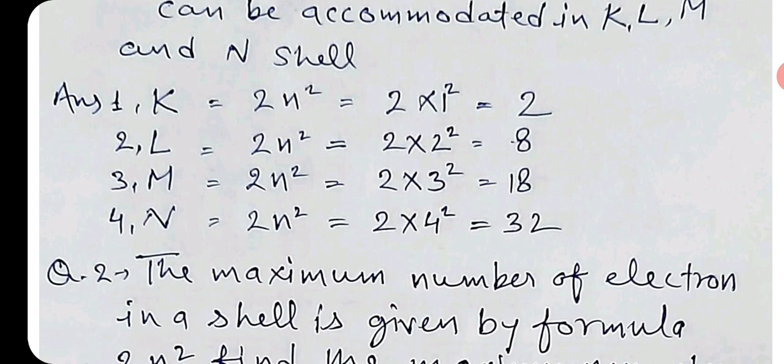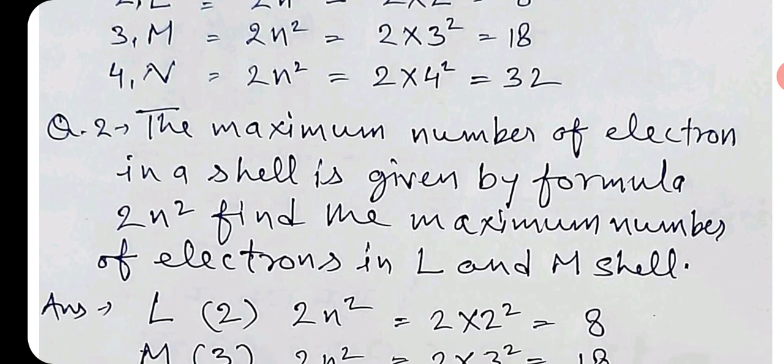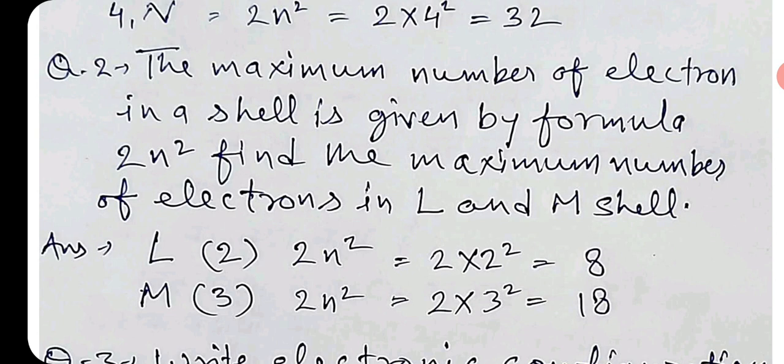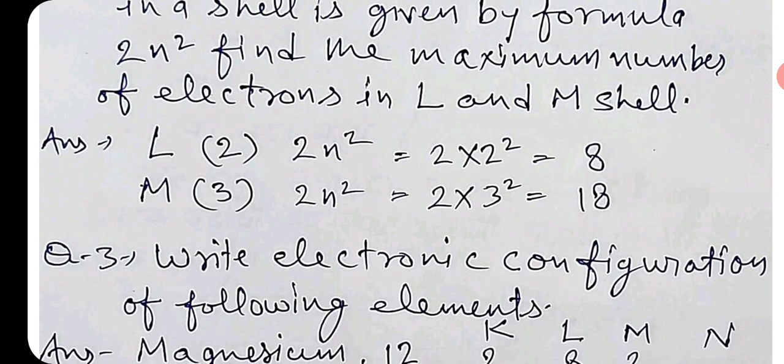Write number in K, L, M, and N shell. तो यह जो भी आई हैं, करके अभी मैंने बताया formula होगा, K के लिए N is 1 तो 2N. The maximum number of electrons in a shell is given by formula 2N square. Find the maximum number of electrons in L and M shell, same way as we have to do it. L number 2 है, 2 into 2 is 8. M is 2 into 3 square is equal to 18.